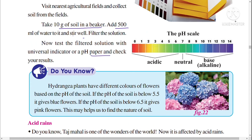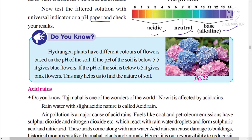If you place a pH paper in the soil solution, observe which color it turns and match it with the pH scale to determine whether the soil is acidic, basic, or neutral. Interestingly, hydrangea plants produce different colored flowers based on the pH of the soil. If the pH of the soil is below 5.5, it gives blue flowers (acidic), and if the pH is below 6.5, it gives pink flowers — this can help us determine the nature of the soil.